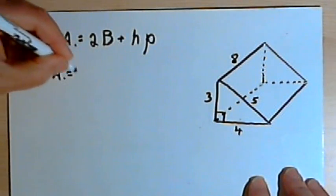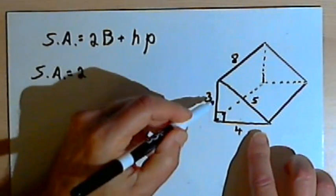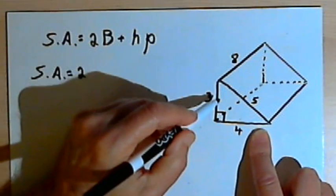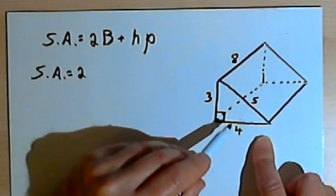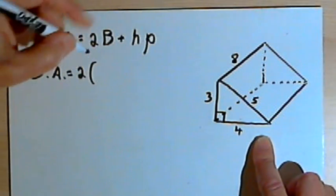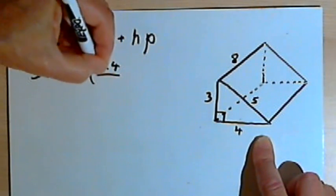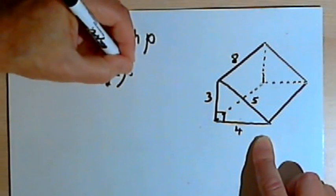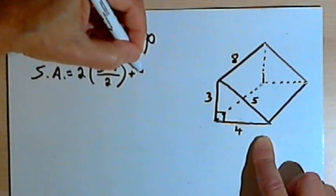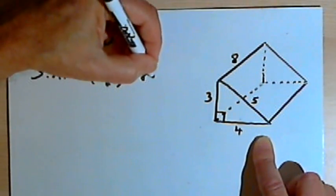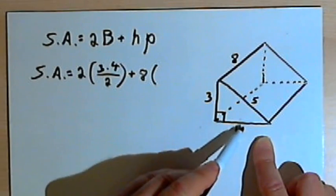The surface area is 2 times the surface area of the base. If this is a right triangle, then its surface area is going to be 4 times 3, the base times the height, divided by 2. So I'm going to have 2 times that surface area, 3 times 4 divided by 2, plus the height. The height is 8 inches, and we want to multiply that by the perimeter, which is 3 plus 4 plus 5.